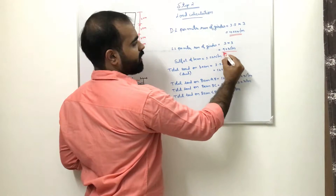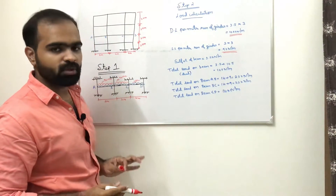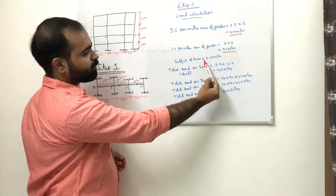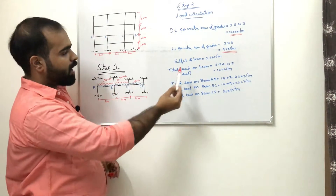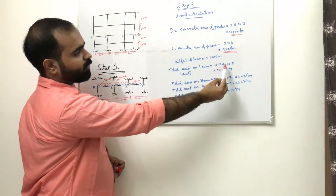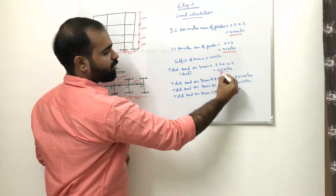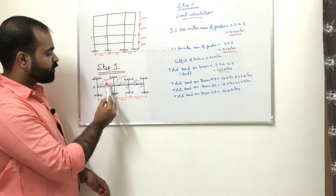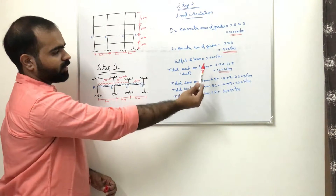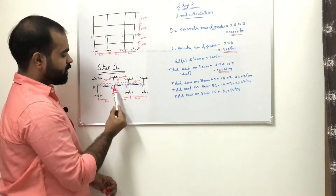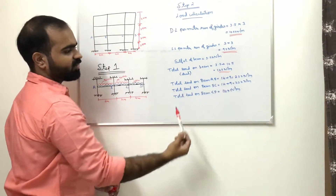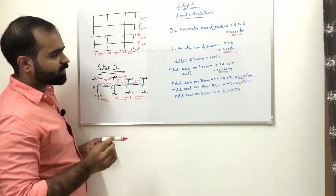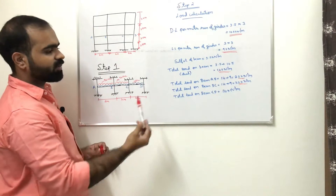Self-weight of beam is 3.5 kN/m. Total dead load on beam is 10.5 + 3.5 = 14 kN/m. For the span AB with dead load plus live load: 14 + 9 = 23 kN/m. For span BC with dead load plus live load: 23 kN/m. For span CD with dead load only: 14 kN/m.